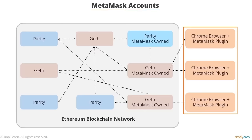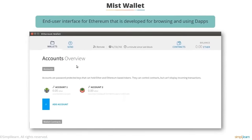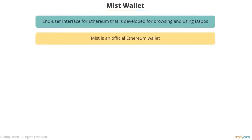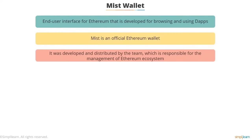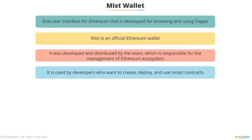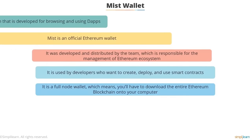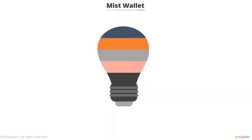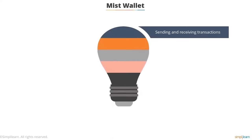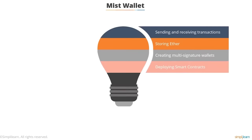Mist Wallet is the end-user interface for Ethereum developed for browsing and using DApps. It is an official Ethereum wallet developed and distributed by the team responsible for managing the Ethereum ecosystem. It is usually used by developers who want to create, deploy, and use smart contracts. It is a full node wallet, meaning you'll have to download the entire Ethereum blockchain onto your computer. Applications of Mist Wallet: sending and receiving transactions, storing Ether, creating multi-signature wallets, and deploying smart contracts.